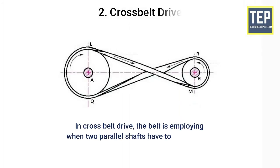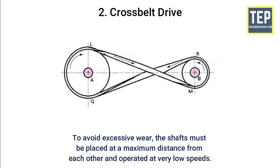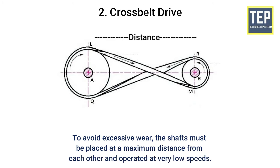In cross belt drives, the belt is employed when two parallel shafts have to rotate in the opposite direction. At the junction where the belts cross, it rubs against itself and wears off. To avoid excessive wear, the shafts must be placed at a maximum distance from each other and operated at very low speeds.